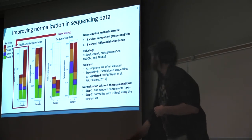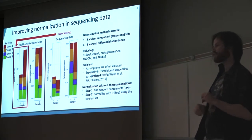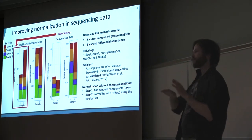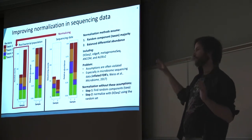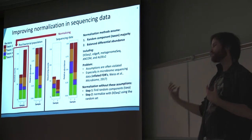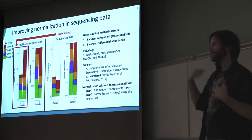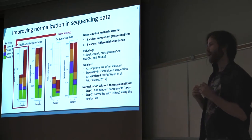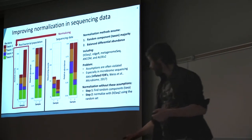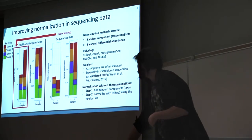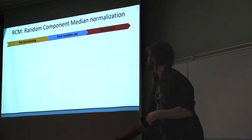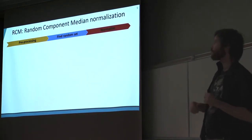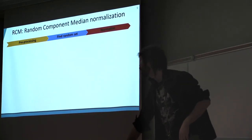The algorithm works like this: the first step is to find which bacterial taxa are randomly distributed across all your samples, and then normalize using DESeq2's method only on that random set of taxa. I've called this method Random Component Normalization, or RCM.